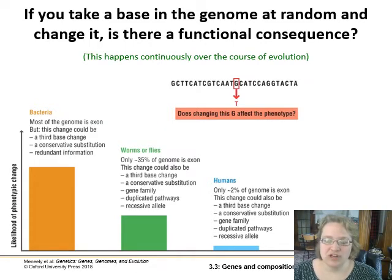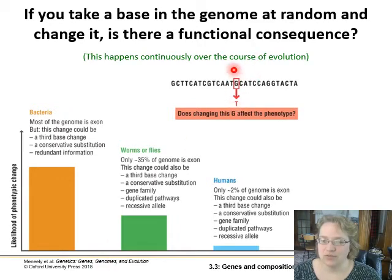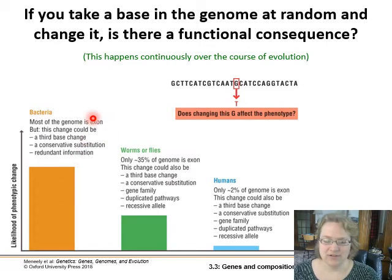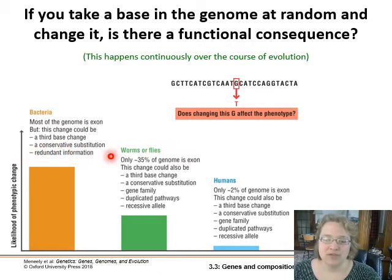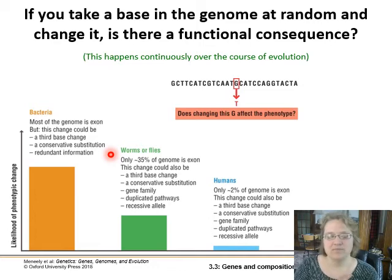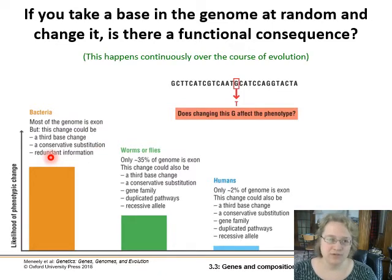If we take a base in the genome at random and change it, is there going to be a functional consequence? In bacteria, there's a high likelihood of change because most of the genome is functional. But the change could just be a third base wobble change, or a conservative substitution where an amino acid swaps for a similar one and the protein still acts the same way, or it could be redundant information — if you have multiple gene copies and change one, the others still function. In worms or flies, the likelihood is lower because only about 35% of the genome is exon. It could similarly be a third base change, or a duplicated pathway where another route achieves the same end product, or it could be a recessive allele that wasn't going to be expressed anyway.